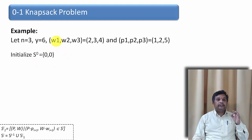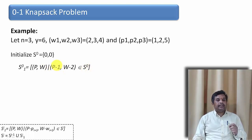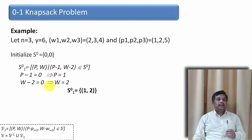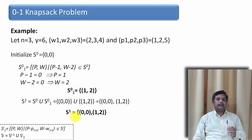Now I check whether I can take the first item, whose weight is 2 and profit is 1, to find S0,1. Using the formula: (p, w) such that (p minus p1, w minus w1) belongs to S0. Here p1 is 1 and w1 is 2. So p minus 1 = 0 and w minus 2 = 0, giving p = 1 and w = 2. So S0,1 = {(1, 2)}. Then S1 = S0 union S0,1, which gives S1 = {(0, 0), (1, 2)}.